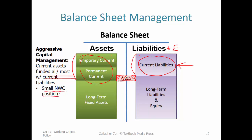That small net working capital position attests to the high risk. When downturns come, net working capital gets wiped out quickly, and we still have bills to pay. That means tapping into long-term fixed assets and reducing equity — which we really don't want to do. We want to grow equity and build shareholder value into the future.